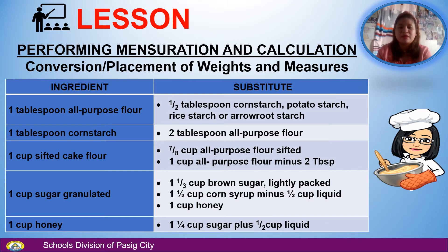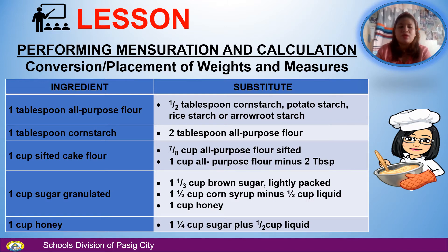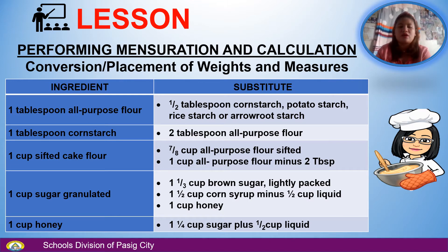Our lesson for today is all about performing measurement and calculation, conversion, and substitution of weights and measures. In the first column is the list of common baking ingredients with particular measurements, and the second column is the substitute ingredient. 1 tablespoon of all-purpose flour equals one-half tablespoon of cornstarch, potato starch, rice starch, or arrowroot starch. 1 tablespoon of cornstarch equals 2 tablespoons of all-purpose flour. 1 cup sifted cake flour equals 7/8 cup of all-purpose flour sifted, or 1 cup all-purpose flour minus 2 tablespoons. 1 cup of granulated sugar equals 1 and one-third cup brown sugar lightly packed, or 1 and one-half cup corn syrup minus 1 and one-half cup liquid, or 1 cup of honey.